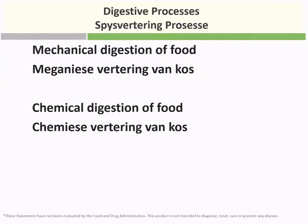The digestive processes include mechanical digestion — the biting and chewing and so forth — whereas chemical digestion involves actual chemical reactions where enzymes break down food into simple substances.